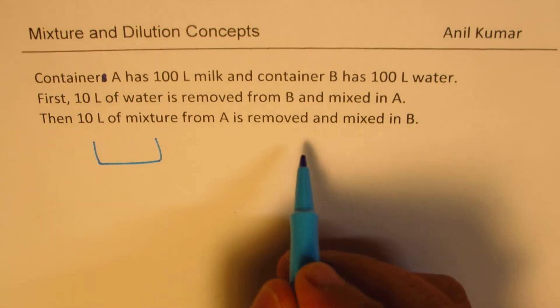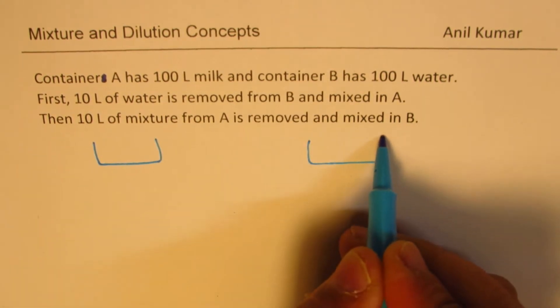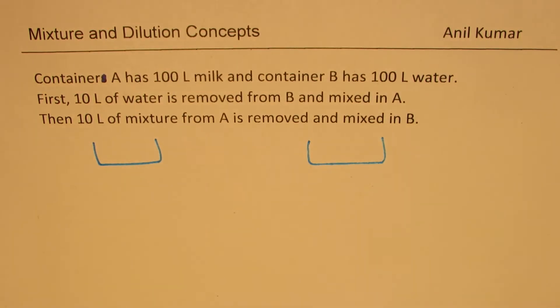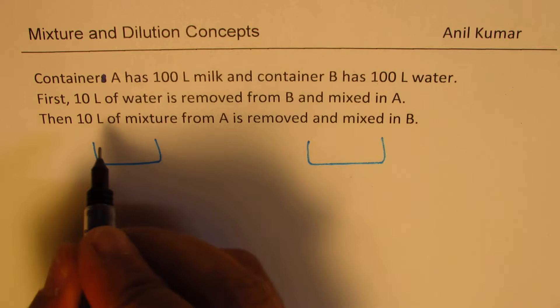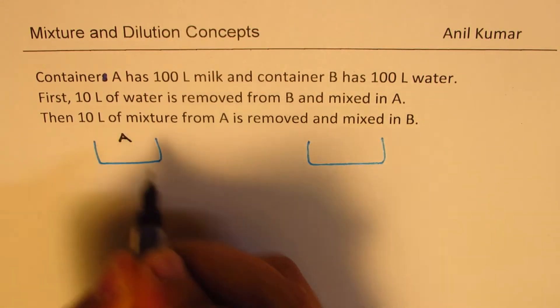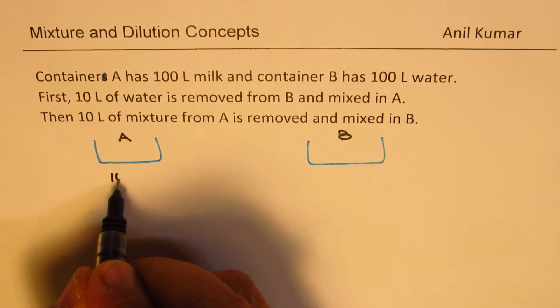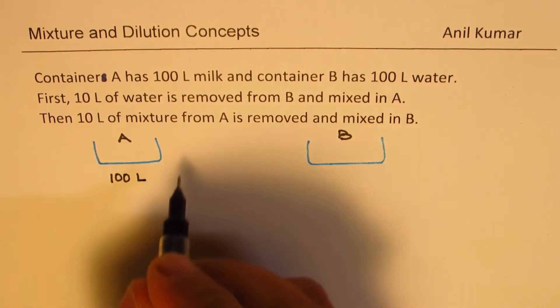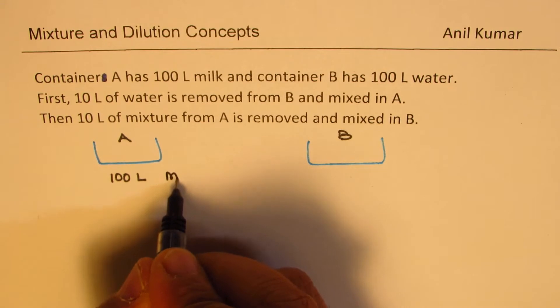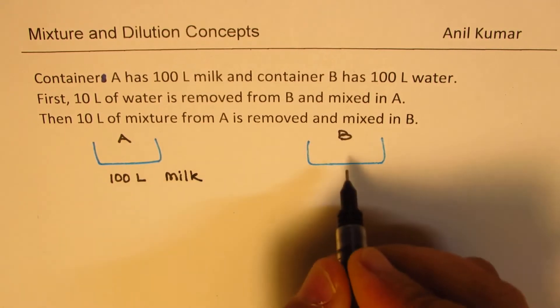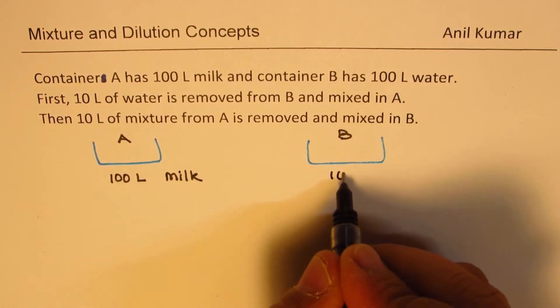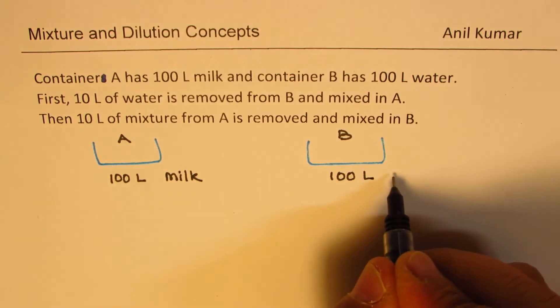So let's say we have these two containers. In container A we have 100 litres of milk. This is A for us, this is B for us, and to start with we have 100 litres of milk. So this is mostly milk and this is pure water. We have 100 litres of water.